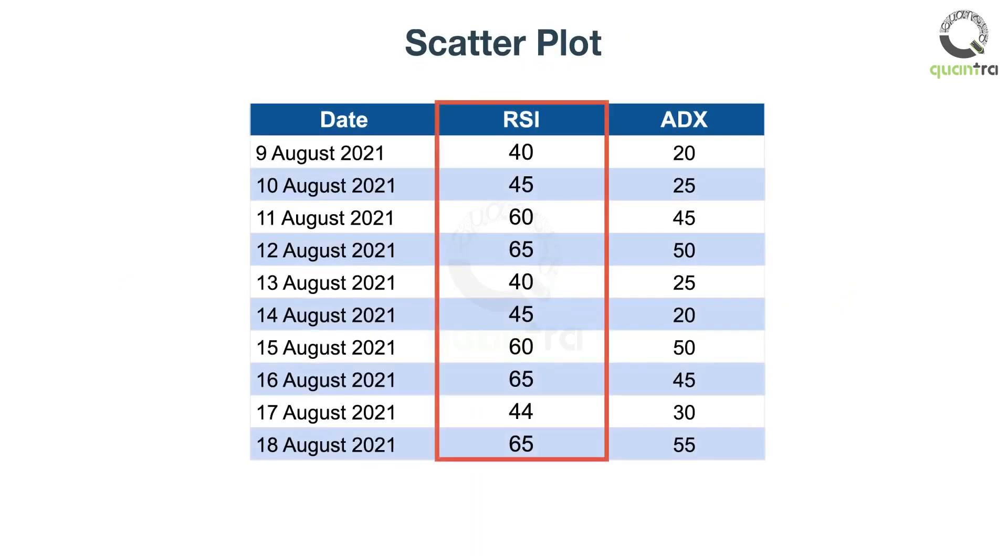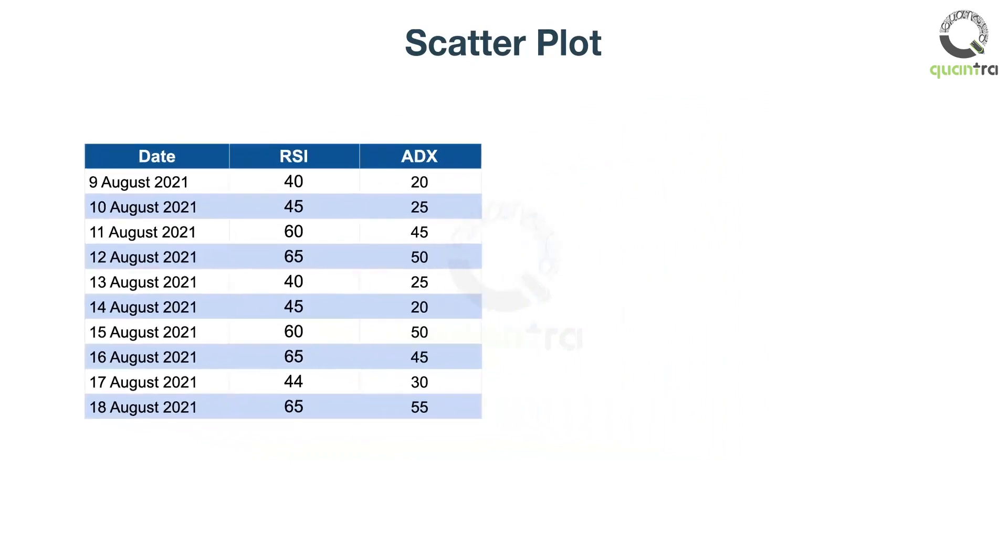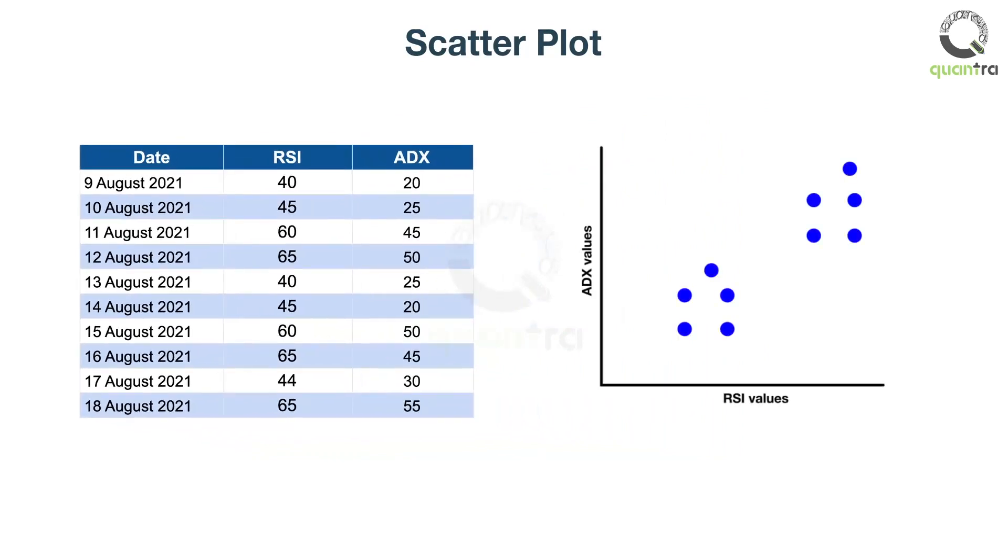The table shows the RSI and ADX values for JP Morgan and a scatter plot to visualize these points.